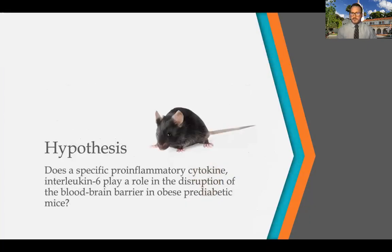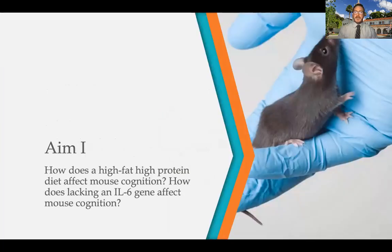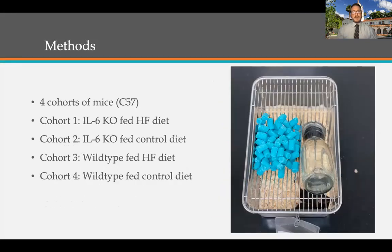This leads me to my hypothesis: does the specific pro-inflammatory cytokine interleukin-6 play a role in the disruption of the blood-brain barrier in obese pre-diabetic mice? My first aim is: how does a high-fat diet affect mouse cognition, and how does lacking the IL-6 gene affect mouse cognition? I'll have four cohorts: cohort 1 is an IL-6 knockout fed a high-fat diet; cohort 2 is an IL-6 knockout fed a controlled diet; cohort 3 is a wild-type fed a high-fat diet; cohort 4 is a wild-type fed a controlled diet. This allows comparison of high-fat diets with and without IL-6, and controlled diets against IL-6 knockout and wild-type.